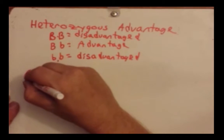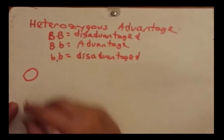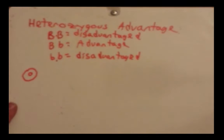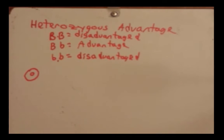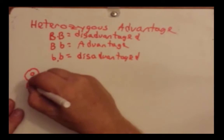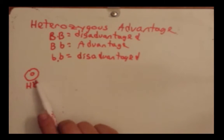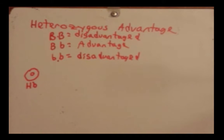A red blood cell lacks a nucleus and is packed full of a protein called hemoglobin. Hemoglobin helps deliver oxygen throughout the body and retrieve carbon dioxide to take it outside of the organism. The red blood cell also has to be incredibly flexible because it has to fit through very small capillaries — the smallest blood vessels in our body.